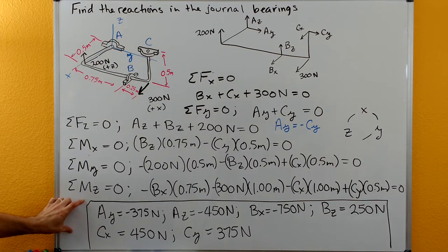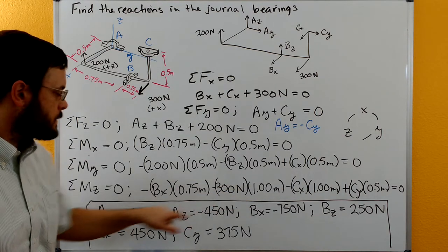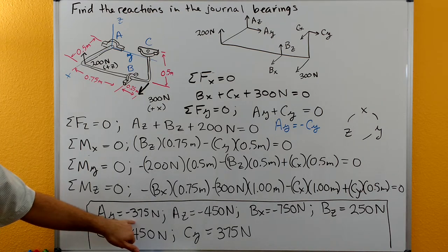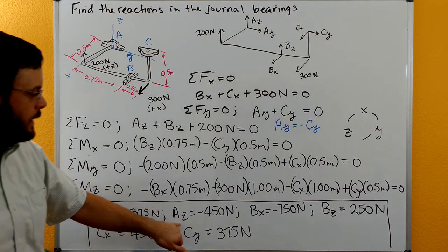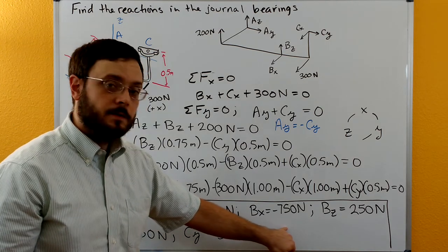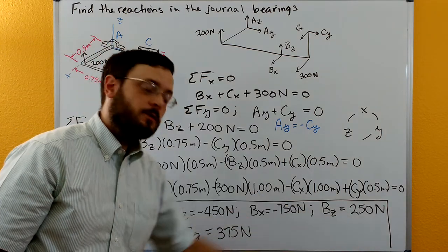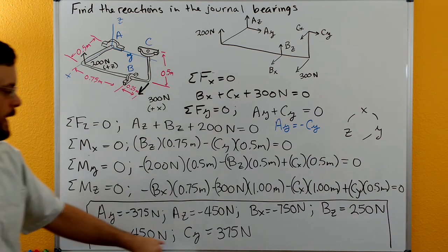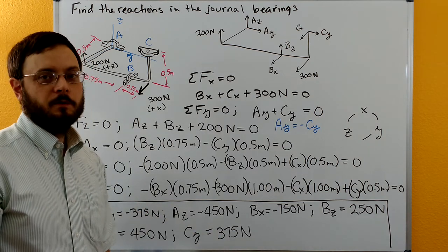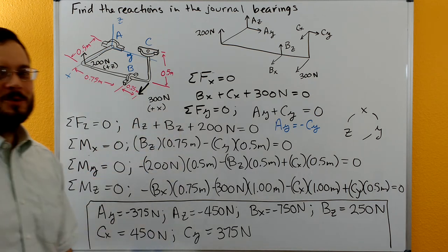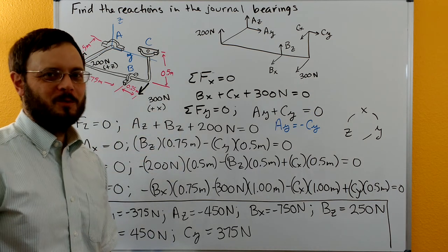Solving both online and by substitution, the answers are: AY equals negative 375 newtons, AZ equals negative 450 newtons, BX equals negative 750 newtons, BZ equals 250 newtons, CX equals 450 newtons, and CY equals 375 newtons. It would take about five chalkboard spaces to show all the algebra. Thanks for watching!